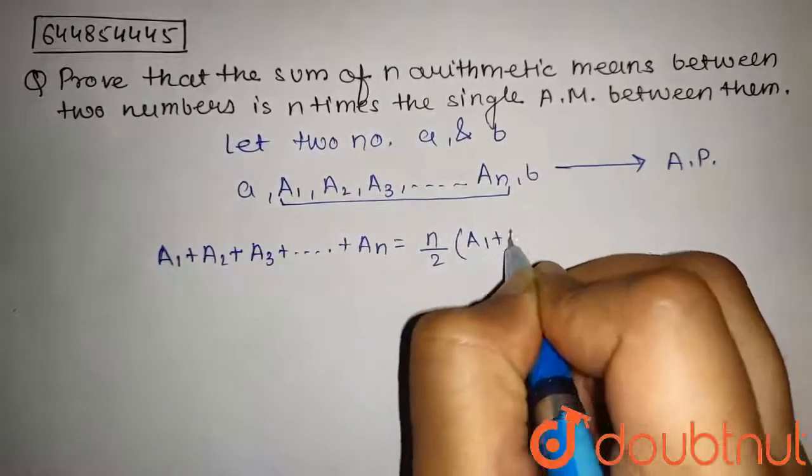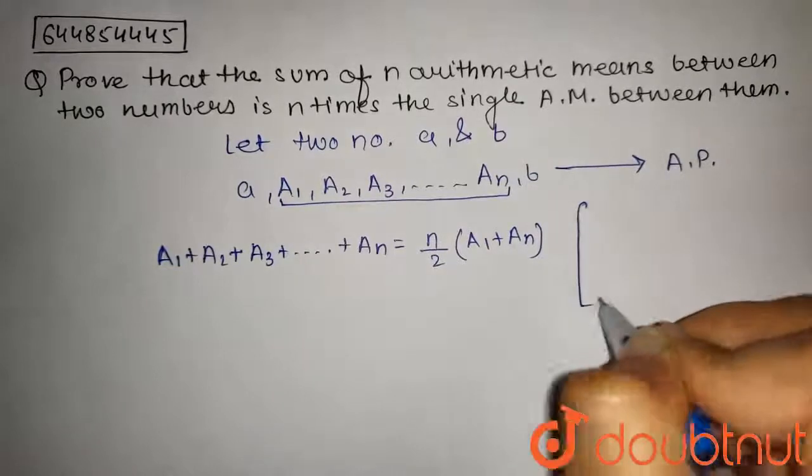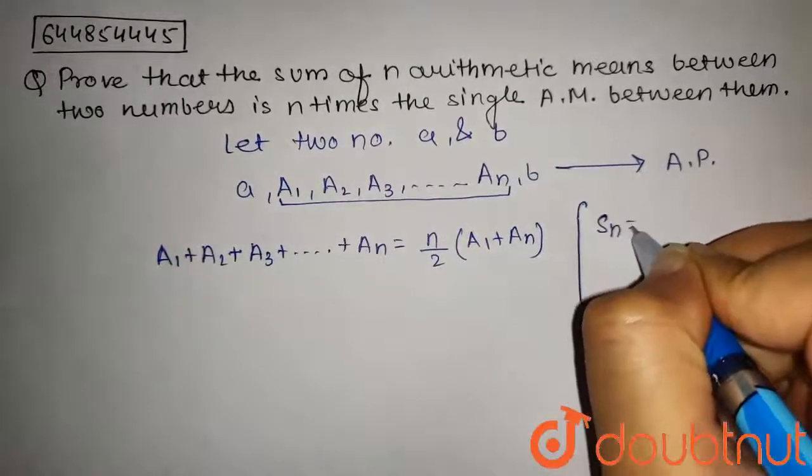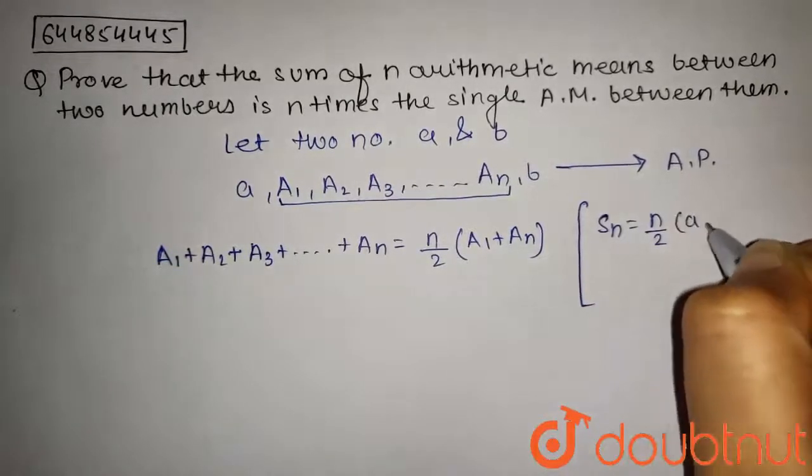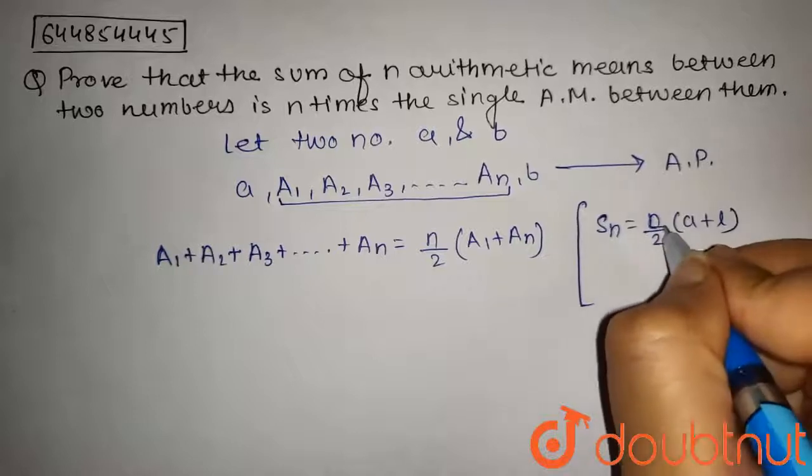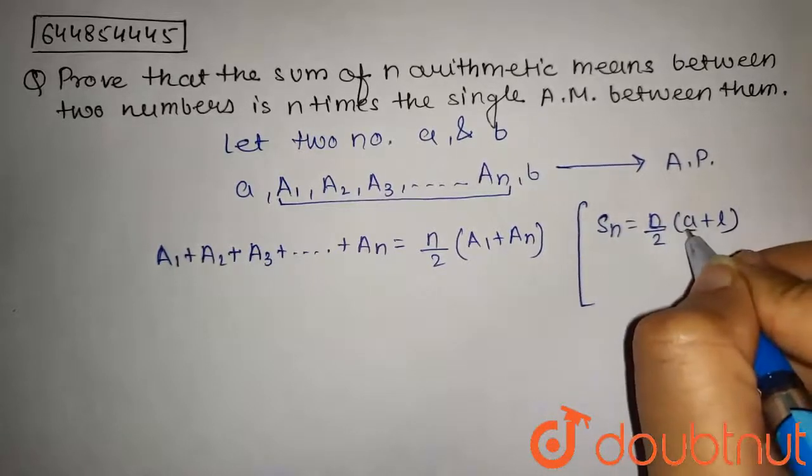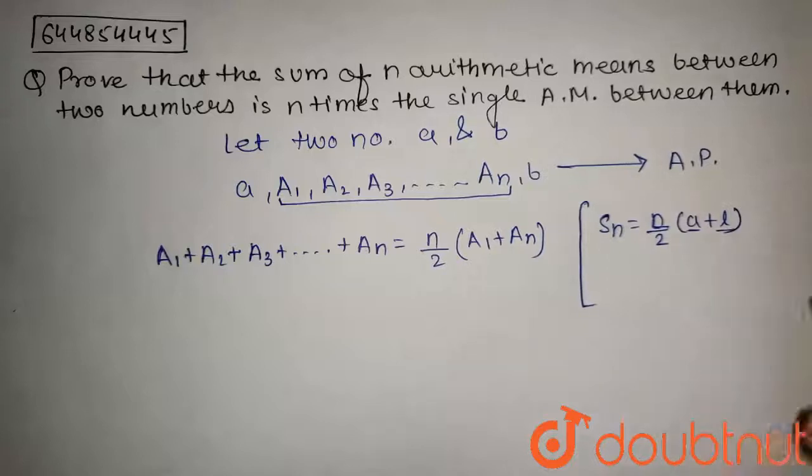As we know that by the formula Sₙ = n/2(a + l), where n is the number of terms, a is the first term, and l is the last term.